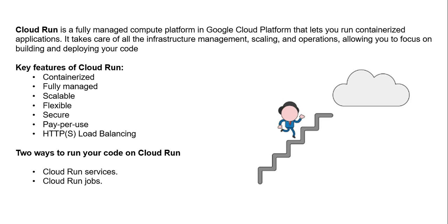Let's look at the key features of Cloud Run one by one. The first one is containerized — you need to package your application code and dependencies into a container image, which can be deployed and run on Cloud Run. Next is fully managed — Cloud Run handles all of it; you don't need to worry about scaling the infrastructure or managing the servers.